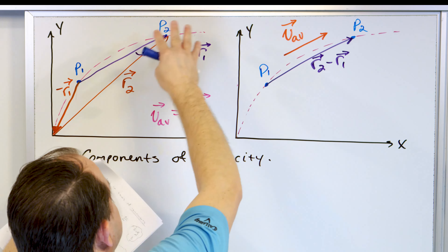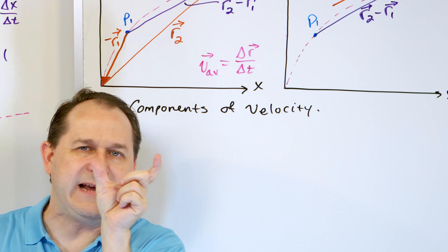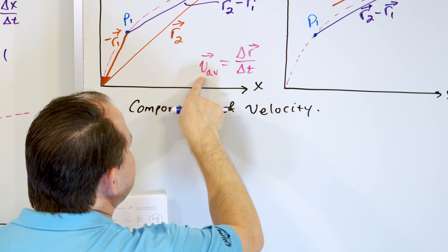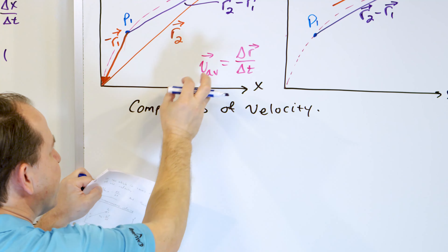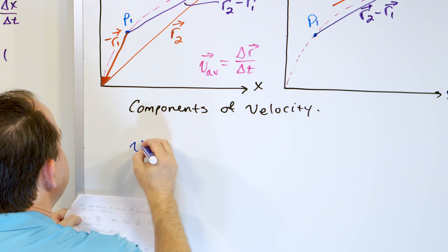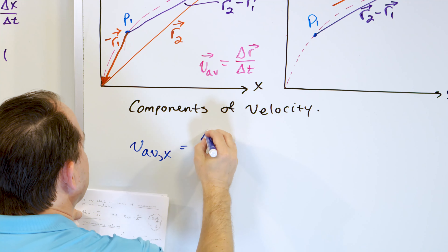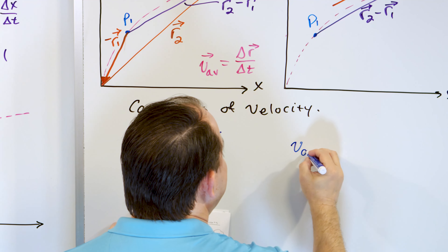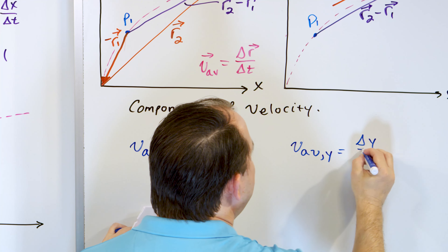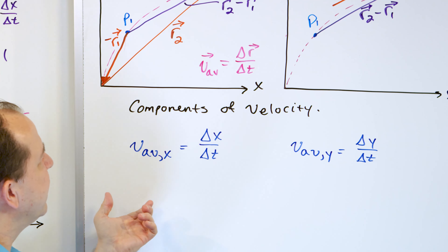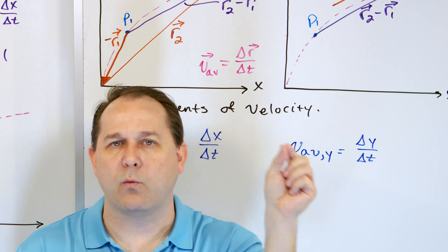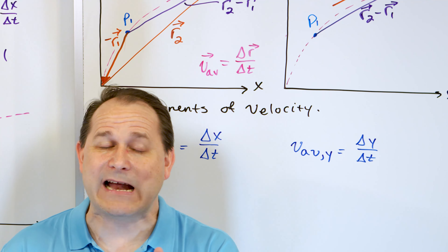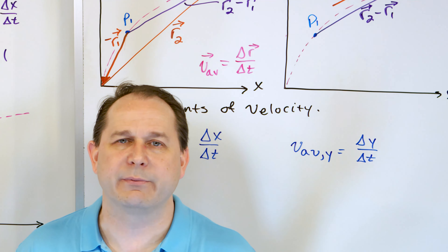Let's talk about components of the velocity. Right now we're considering the entire path, but I told you in the beginning we really want to understand the x direction and the y direction separately — those are the components. We have one equation for the entire vector, but we can break this into an x equation and a y equation. The average velocity in the x direction is equal to how far the thing goes in the x direction divided by how many seconds it takes. And the average velocity in the y direction is how far it goes in the y direction divided by delta t.